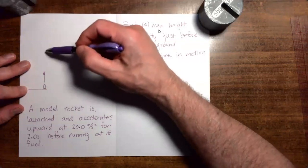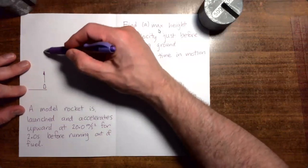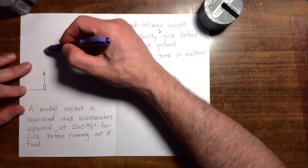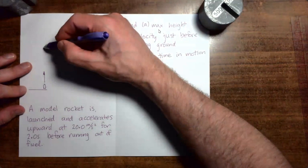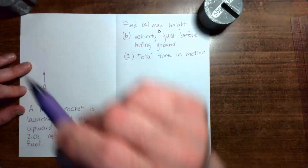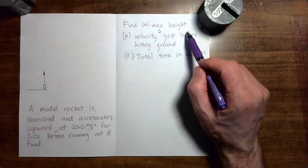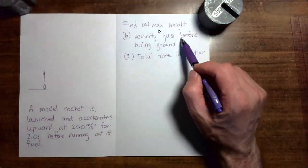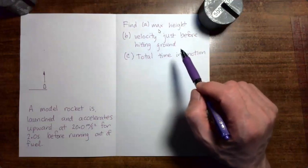In this part of the motion it's not actually free-falling. Then the rocket runs out of fuel, and at that point the rocket starts to free-fall — getting slower on the way up, reaching a maximum position, then turning around and coming back down. We would like to find the maximum height, the velocity of the rocket just before hitting the ground, and the total time in motion.